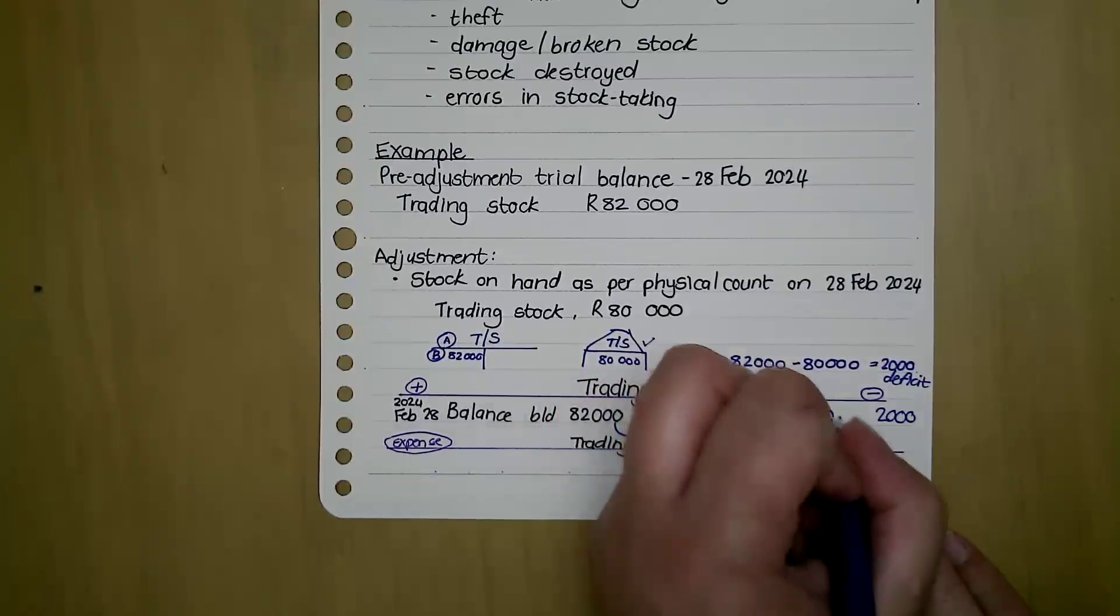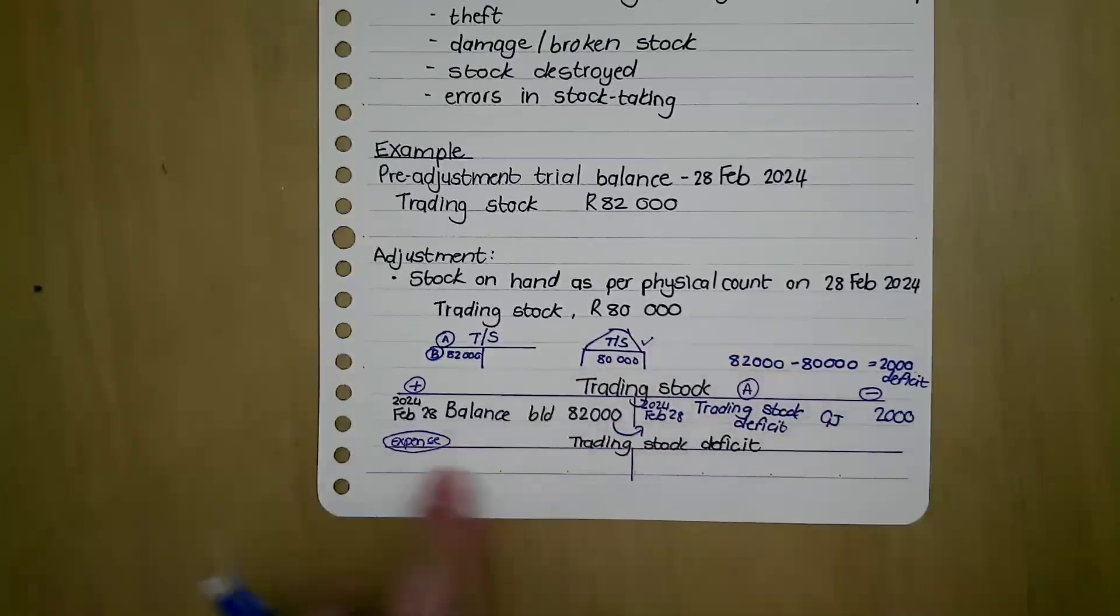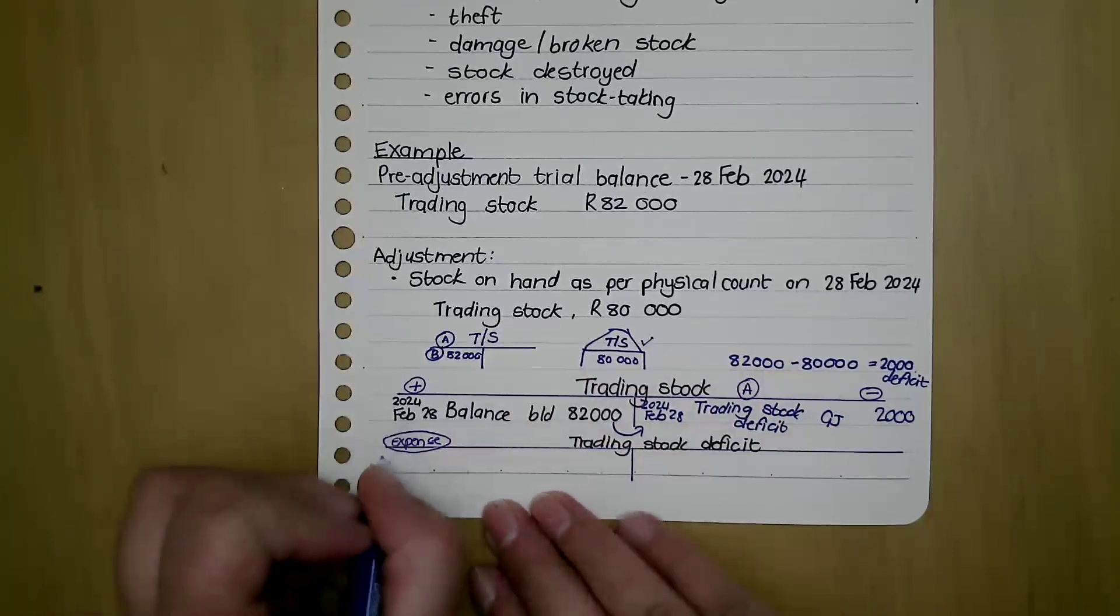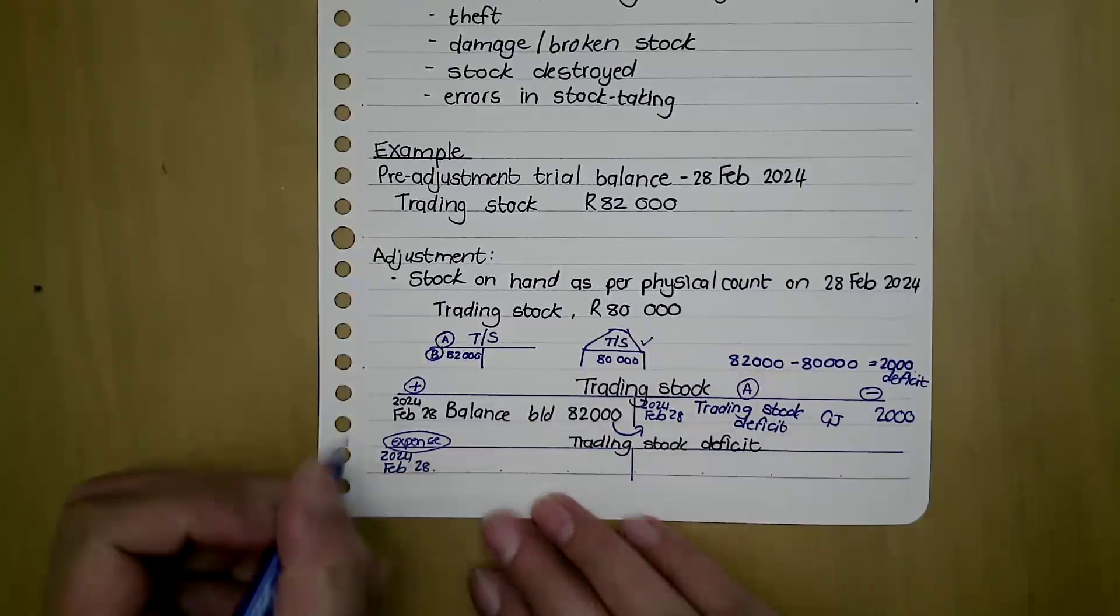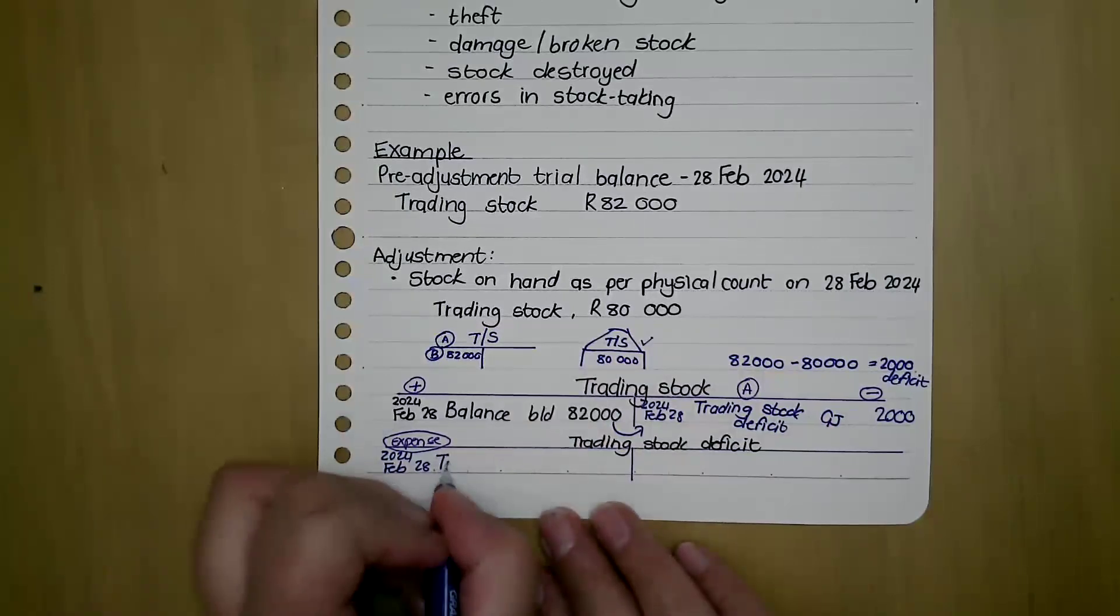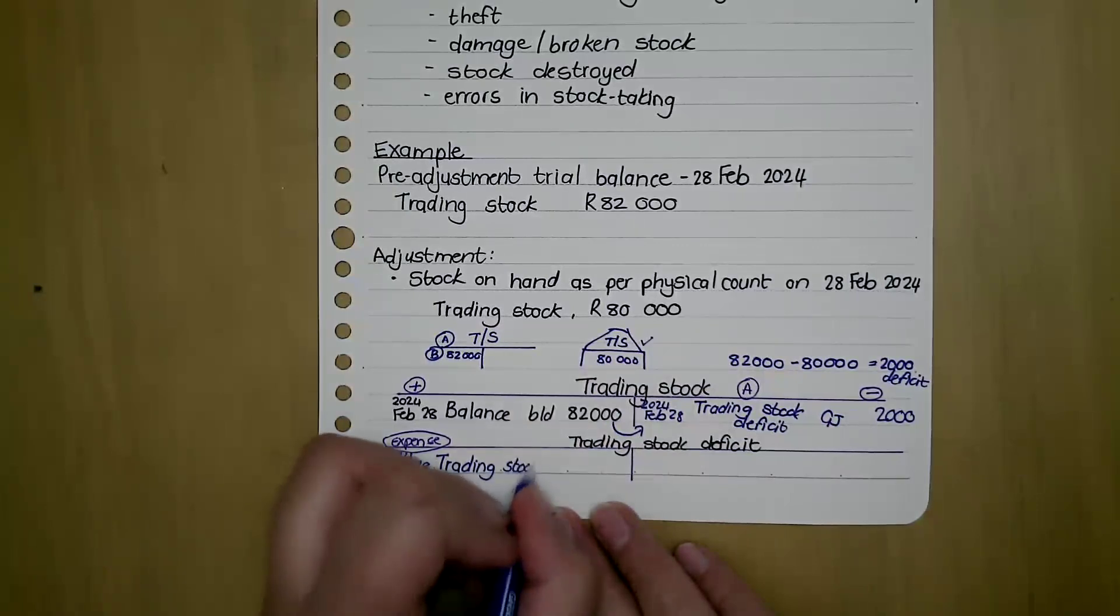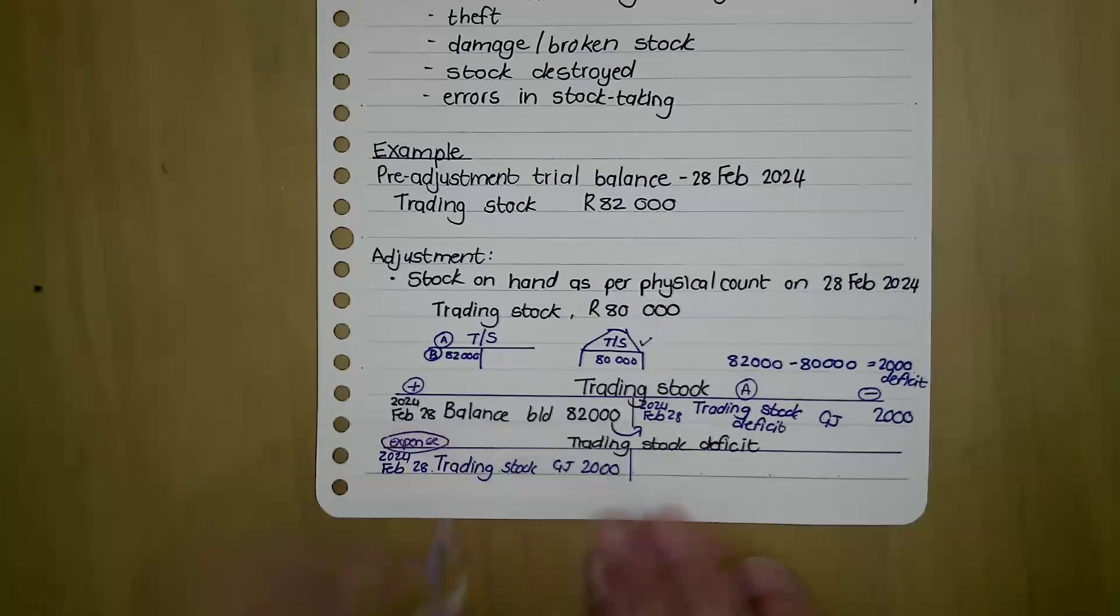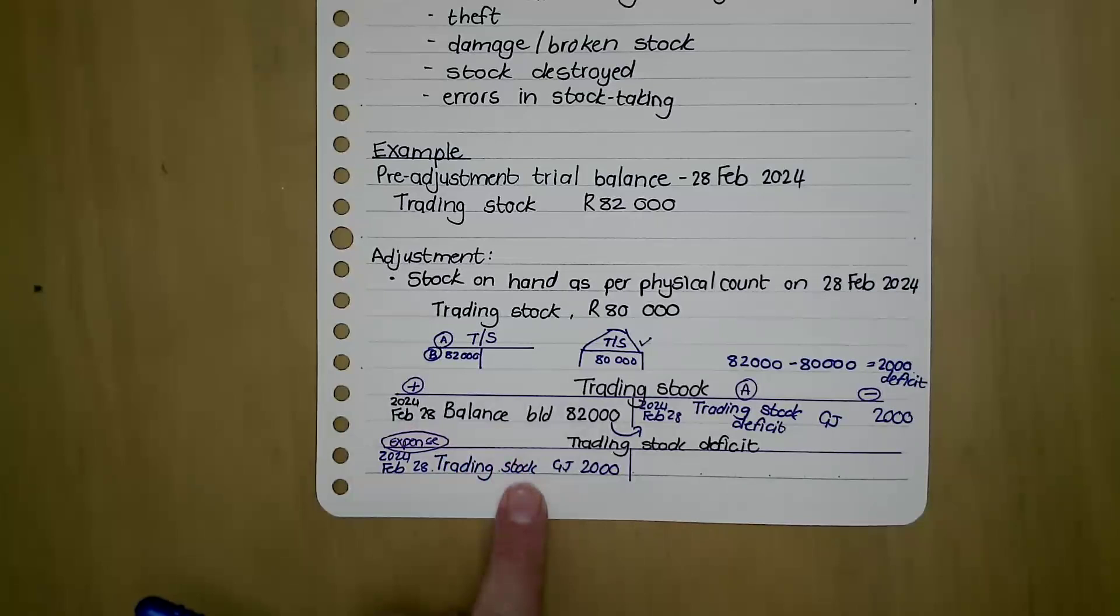Trading stock deficit in the general journal: every debit has a credit, and trading stock deficit is an expense, expense always debit. So I've got 28 February, and my contra account is trading stock. General journal 2,000. So you can clearly see I've debited the trading stock deficit account, and I credit trading stock with the difference.